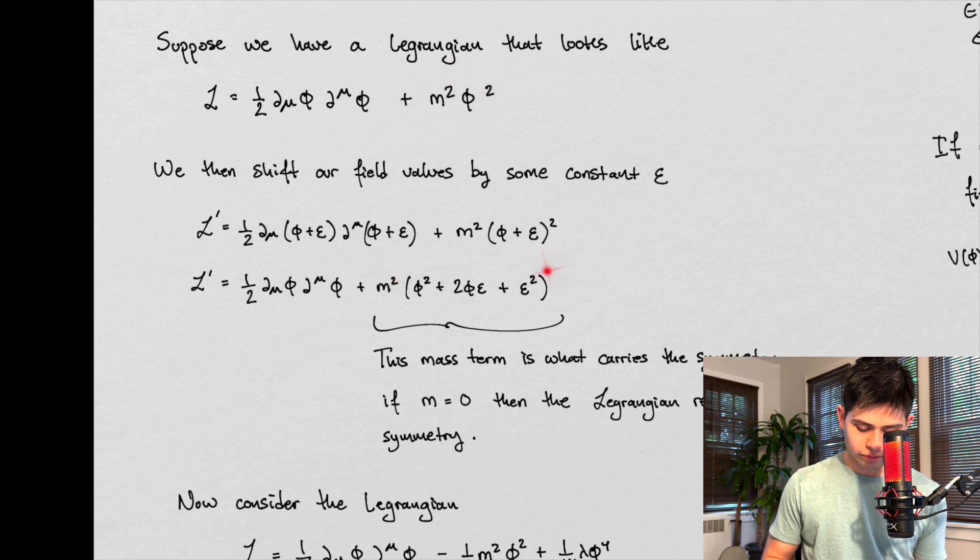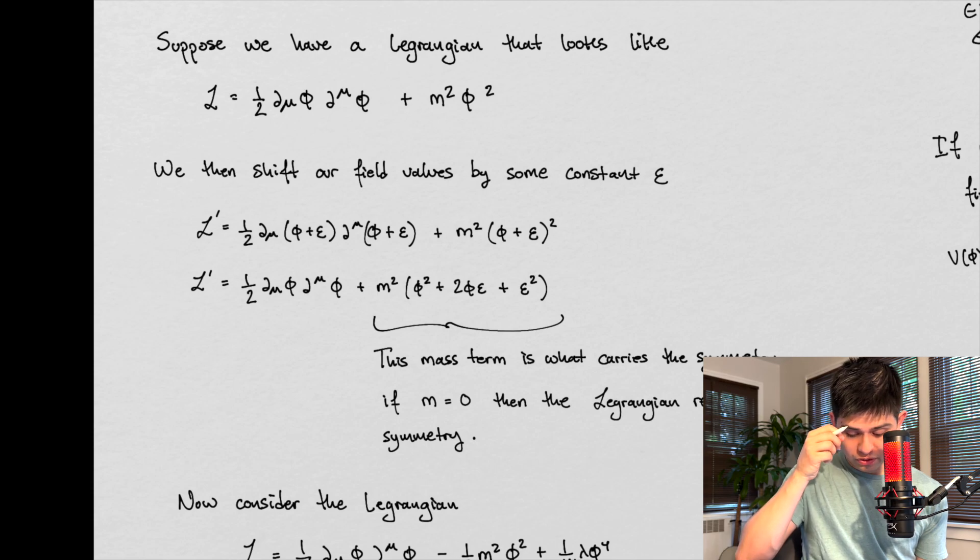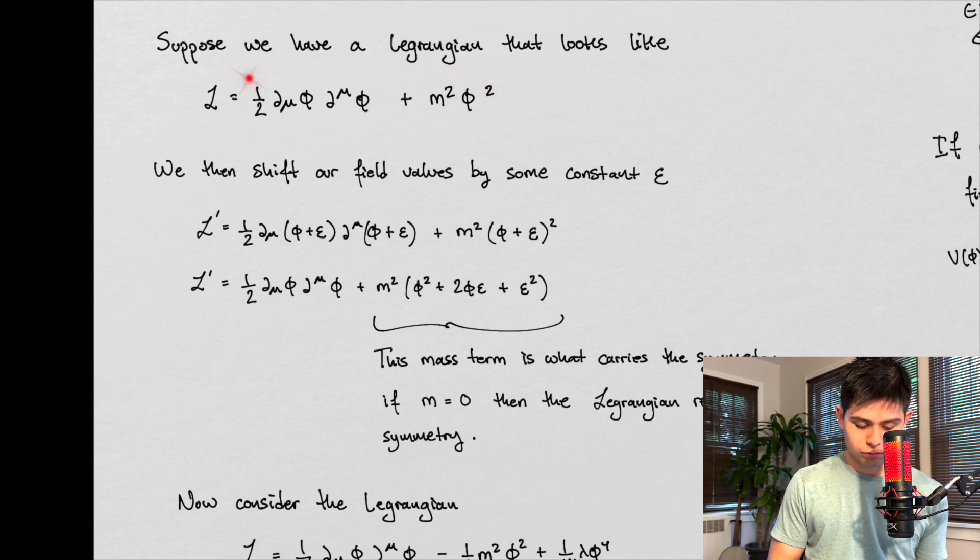We have this new thing right here, which is a consequence of squaring what's inside here. So this mass term sort of is what carries the symmetry, right? Because we don't retain our original Lagrangian. And so if m equals zero, though, then the Lagrangian retains symmetry. So this is important.